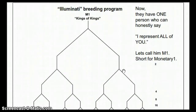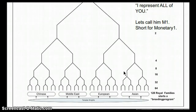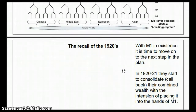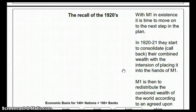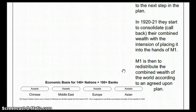Now they had one person who could honestly say, 'I represent all of you.' Let's call him M1, short for Monetary One, because he holds control of all the gold from King Solomon and all the gold from around the world. With M1 in existence, it was time to move on to the next step. In 1920 to 1921, they began to consolidate and call back their combined wealth with the intention of placing it in the hands of M1, Mr. Socorno, who was then to redistribute the combined wealth of the world according to an agreed-upon plan.